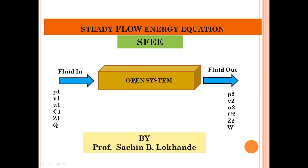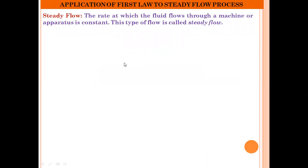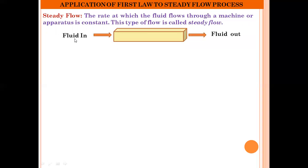Let us first discuss what exactly steady flow and the steady flow process are. Steady flow is defined as the flow in which the rate at which the fluid flows through a machine or apparatus remains constant. This type of flow is called steady flow. As we have already said, the steady flow process is generally applicable to the open system, where fluid enters at one end and leaves at the other end. All thermodynamic properties associated with the fluid flow should not vary with respect to time — then we can say that the flow process is the steady flow process.